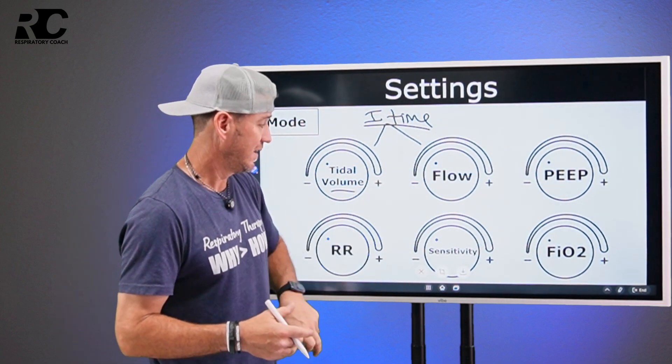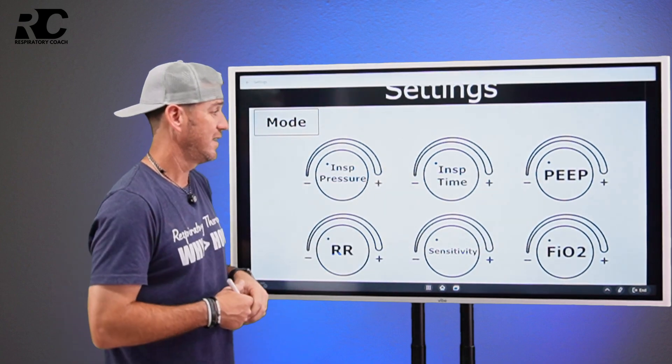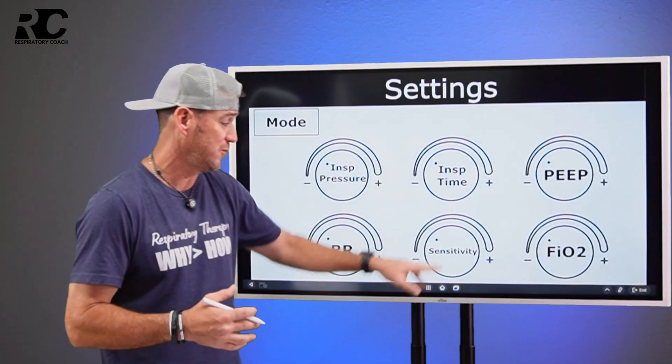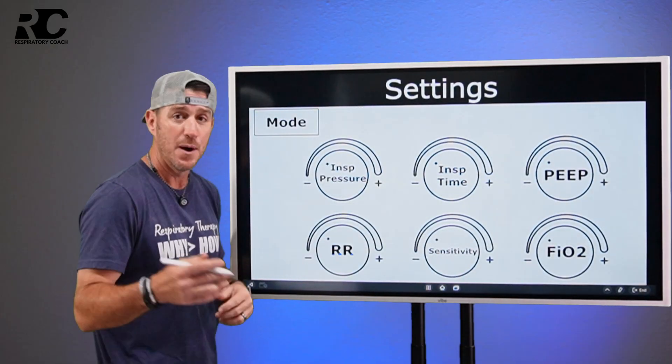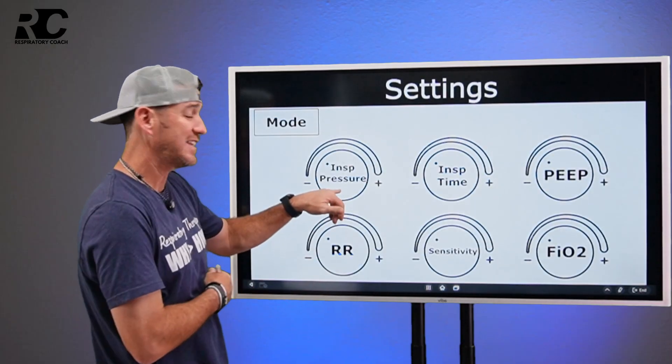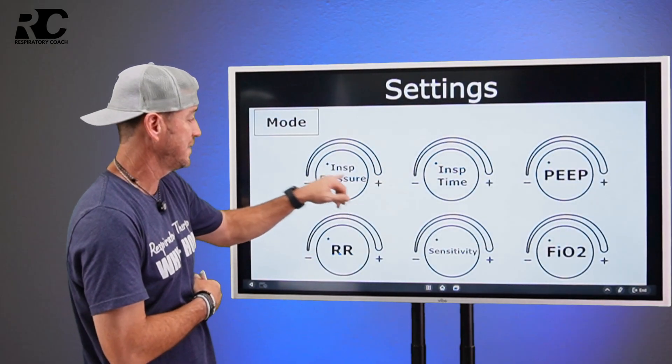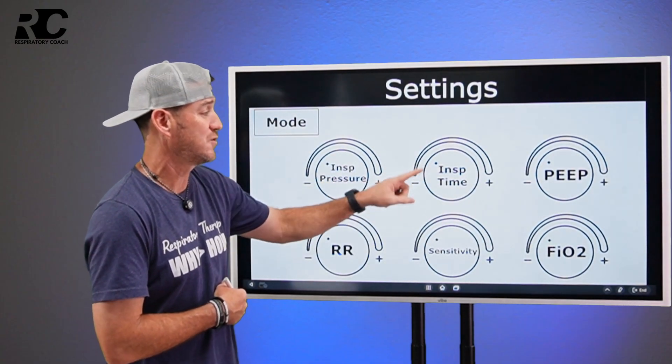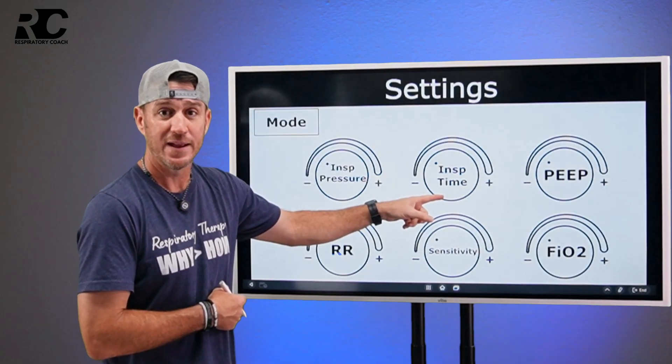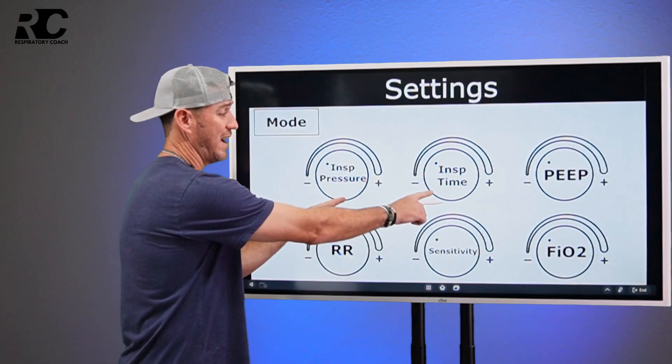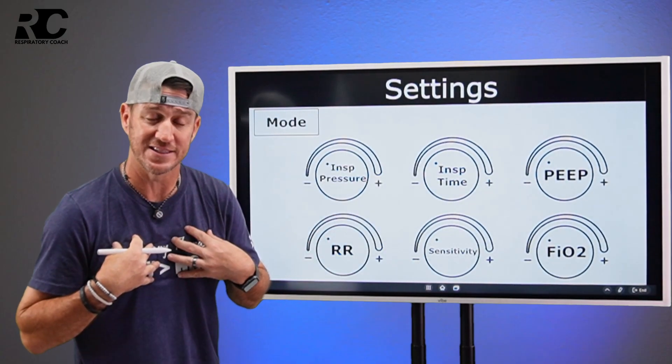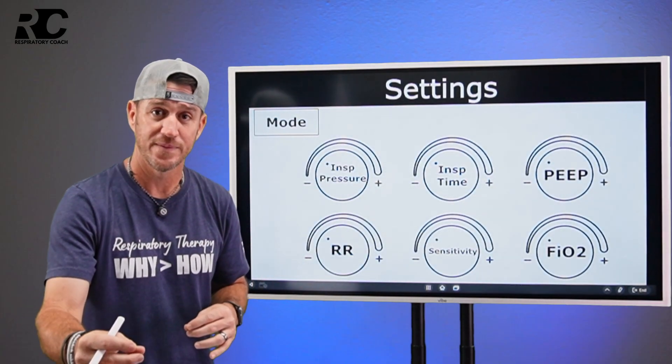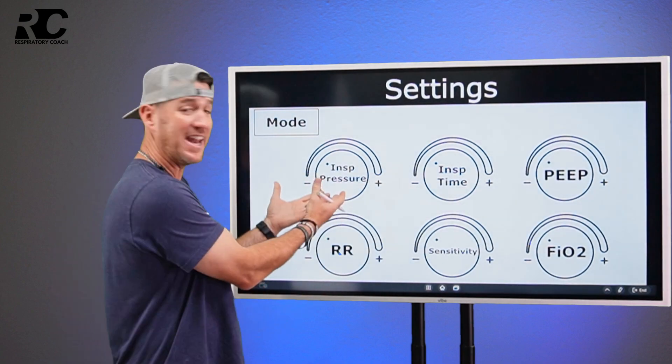You see, now we see the same four settings, PEEP, FiO2, sensitivity, respiratory rate. But now we've got this new setting here. Instead of saying tidal volume, it says inspiratory pressure. And instead of saying flow, it says inspiratory time. You see these two settings right here now tell me as the clinician that we are in pressure control. I know that because I'm setting pressure.